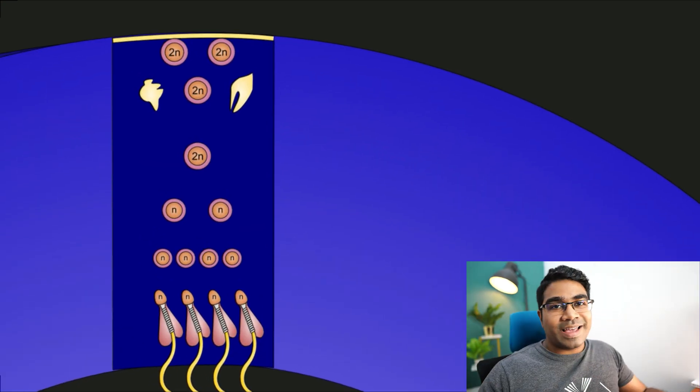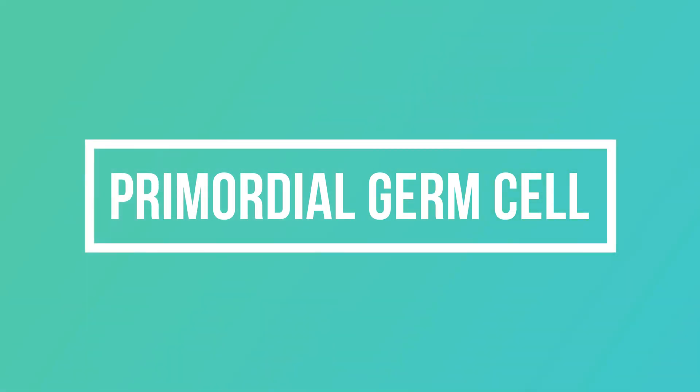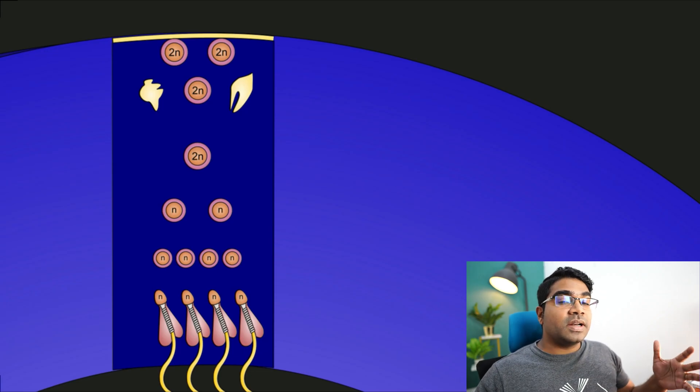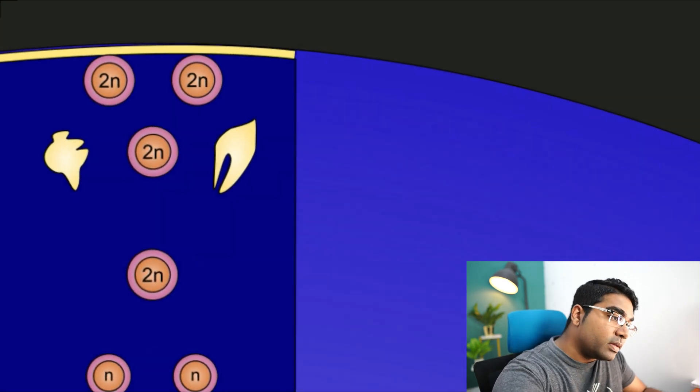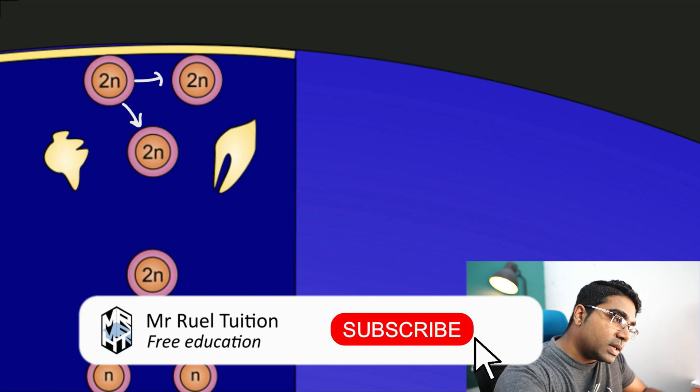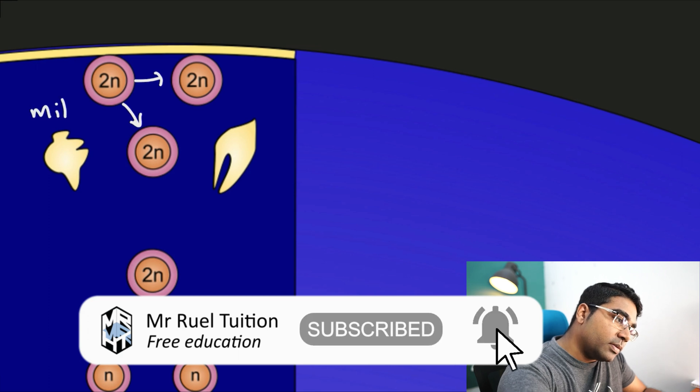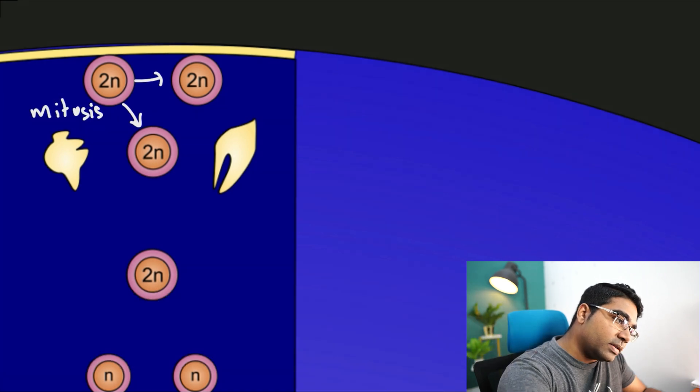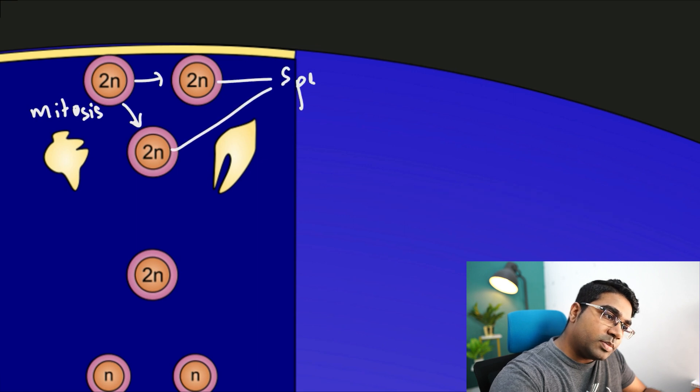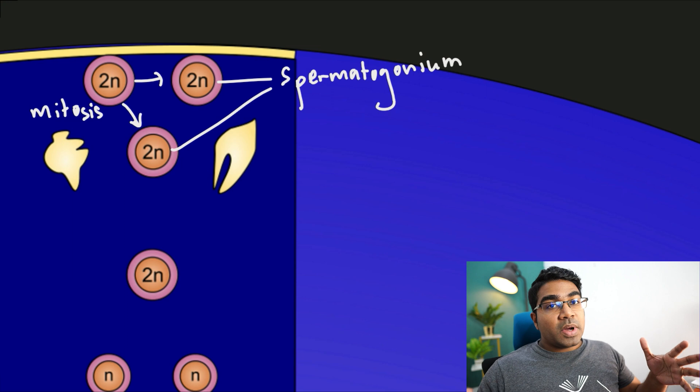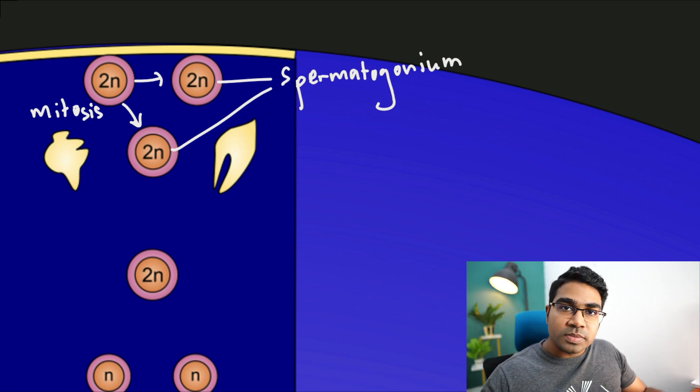The sperm cell begins as a primordial germ cell. The primordial germ cell first undergoes mitosis to produce spermatogonia. The spermatogonium still has the diploid number of chromosomes, meaning it has both chromosomes of every homologous chromosome pair.